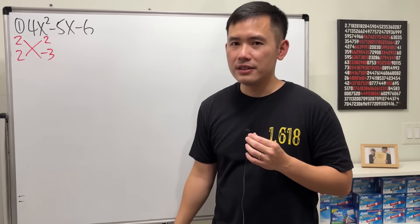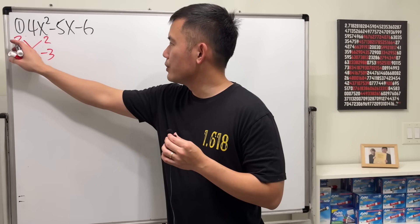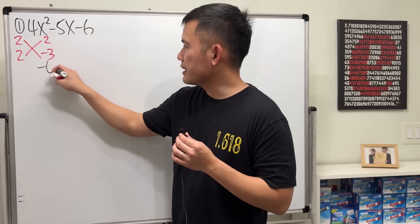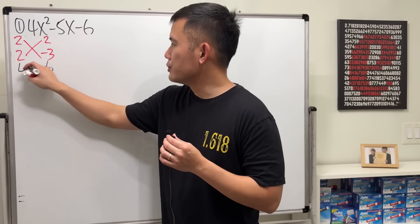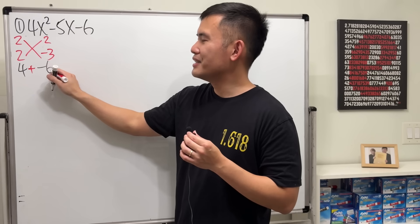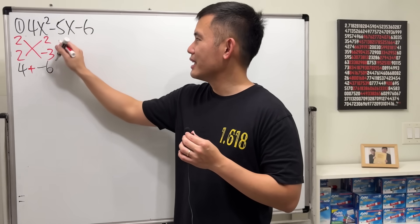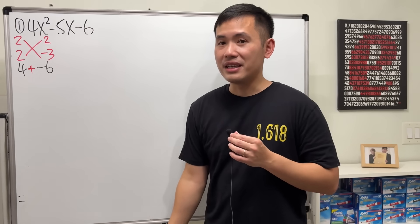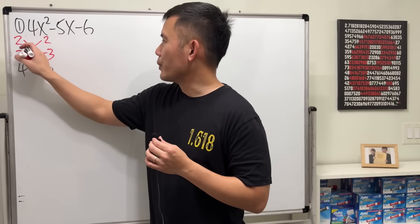How do we know if this is correct? Well, we check by doing 2 times negative 3, which is negative 6, 2 times 2, which is 4, add them up. What's this? That is negative 2. That's not what we want to get right here. We need a negative 5. So this is not what we want.